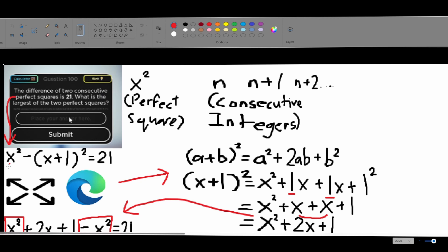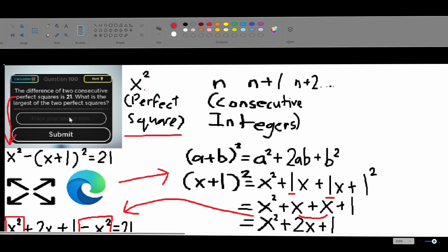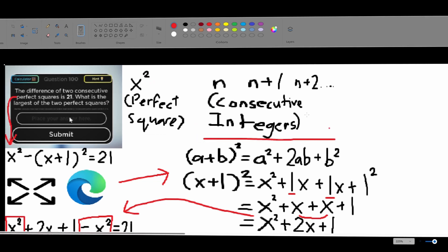So, the difference of two consecutive perfect squares is 21. And just so you know, perfect squares are numbers times itself, and consecutive integers are integers that follow in a sequence.